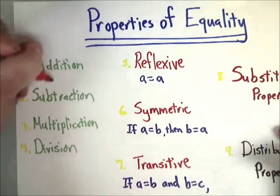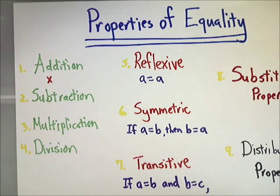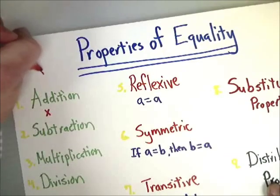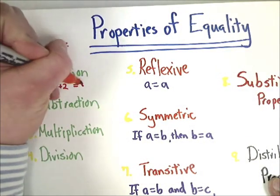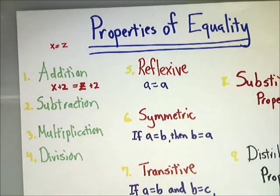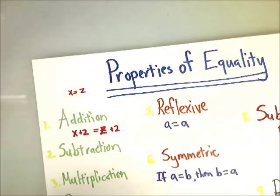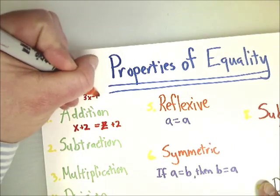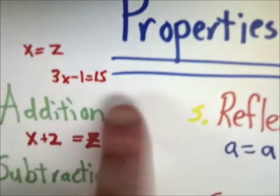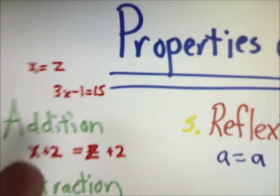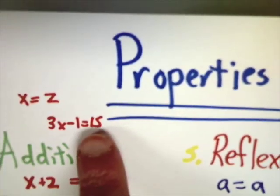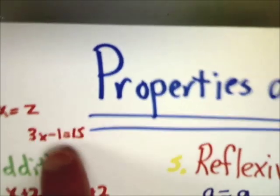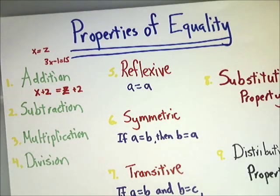All this means is that if I know X equals Z, I can add something to X and it would be the same as adding that same amount to Z. You use this when solving an equation, like 3X minus 1 equals 15. You add 1 to both sides - the justification is the addition property of equality. If you know one side equals the other, adding 1 to both sides keeps them equal.